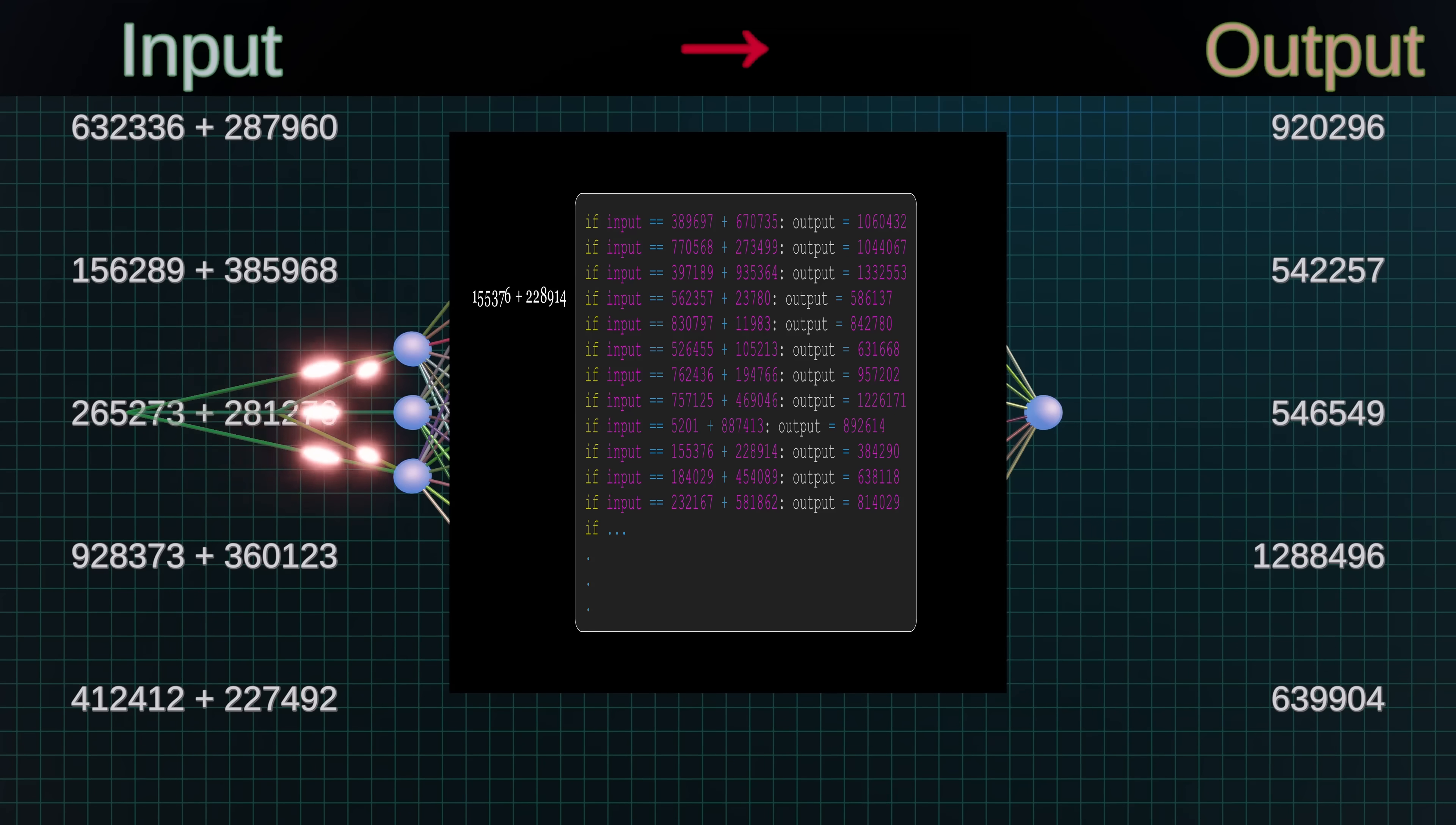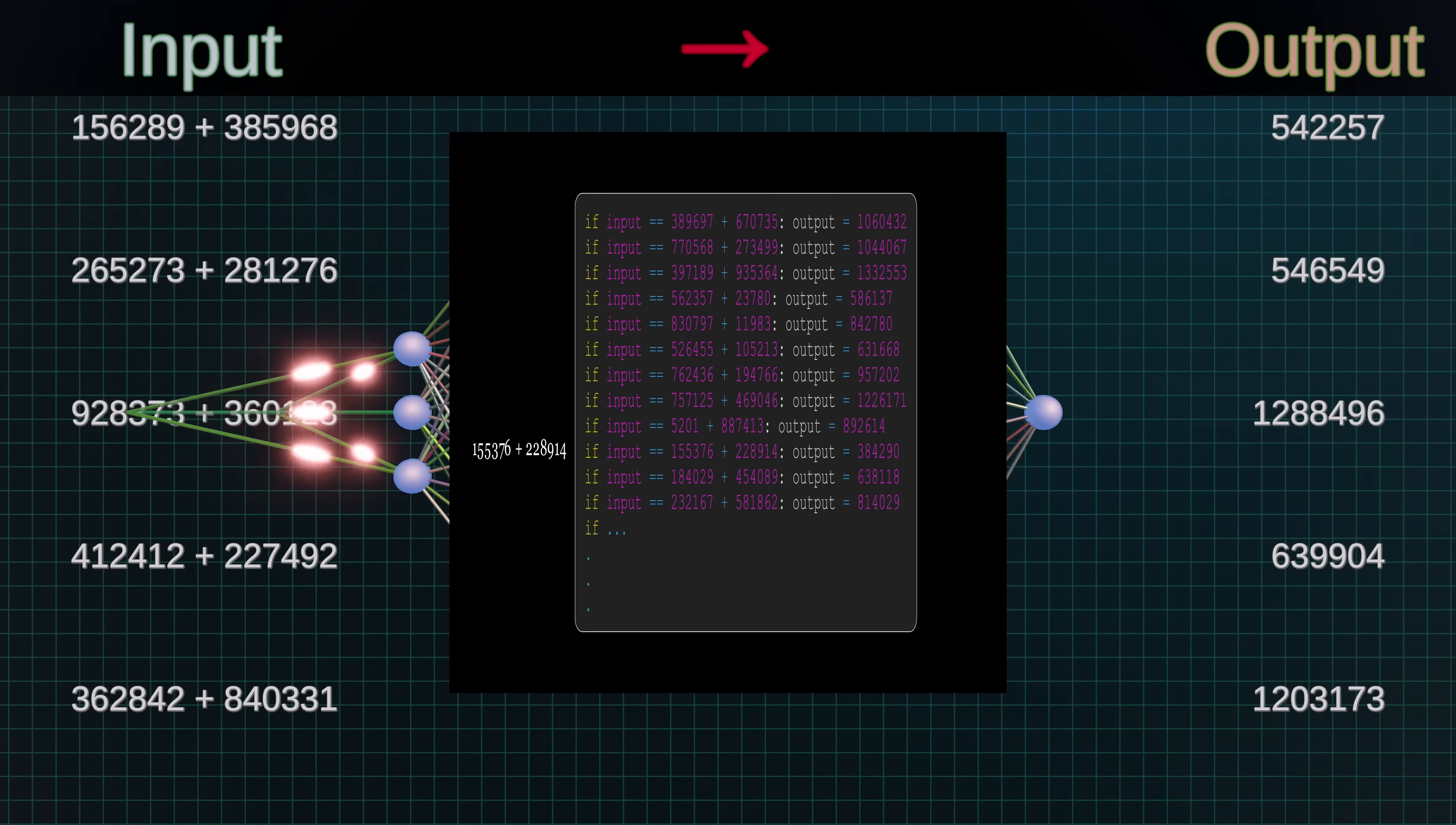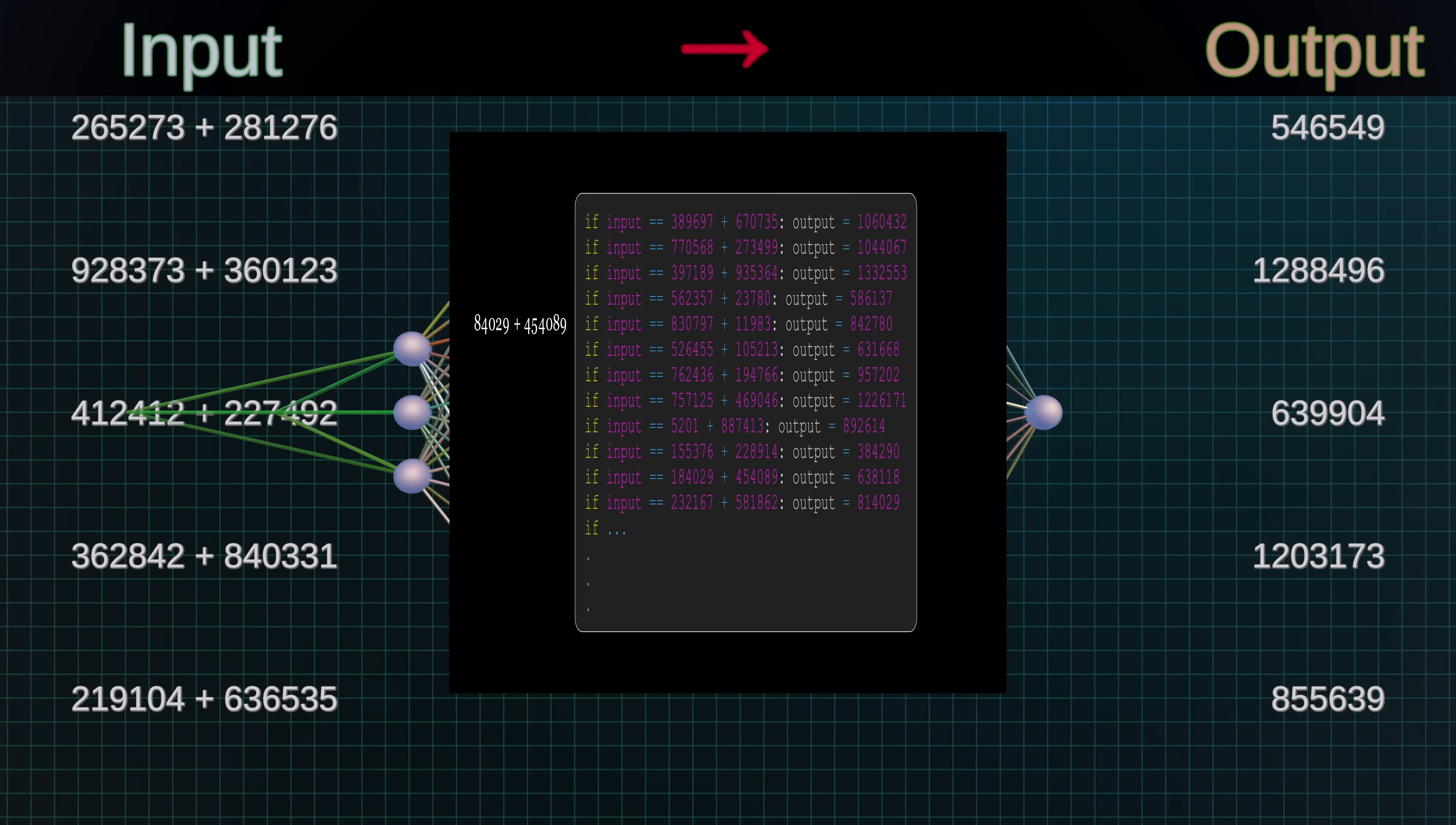This lookup table just lists every single training example and its corresponding output. Remember, the model only cares about making correct predictions for the training examples. Nothing else matters. So, this lookup table is a perfectly valid solution. But of course, this lookup table is a terrible solution, because if you apply it to new numbers which aren't in the training data, you get a completely random output.